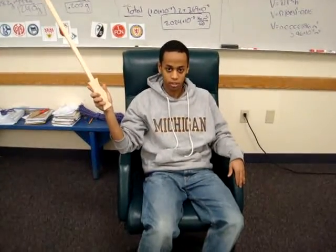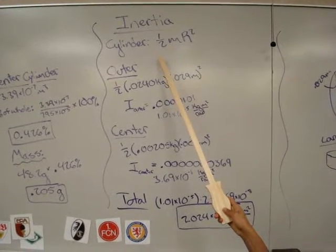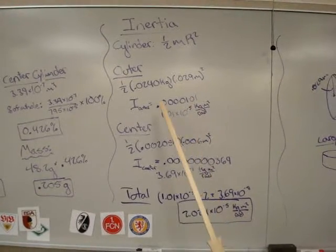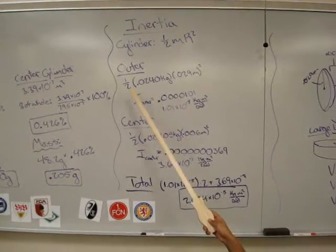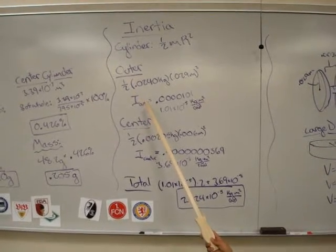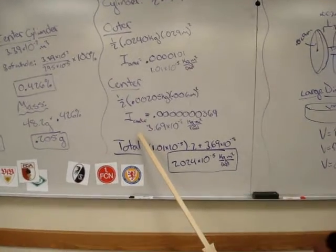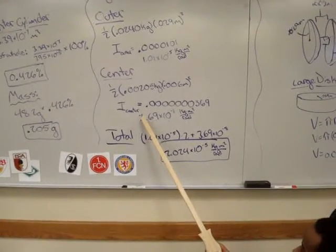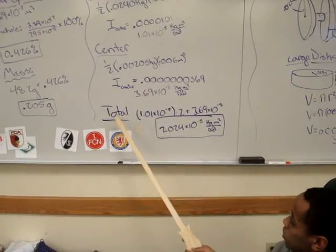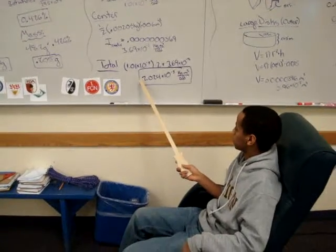Inertia. How did we calculate it? This is how we calculated it. The moment of inertia of a cylinder, according to page 314, is one-half times the mass times the radius squared. After measuring the radius for each of the outer and the center parts, and converting the masses of each to kilograms, we calculated the moment of inertia for each part. After doing the calculations for the outer part, we figured out that the moment of inertia was 1.01 times 10 to the negative 5th kilograms times meter squared over radians. For the center, it was even smaller, 3.69 times 10 to the negative 8th kilograms centimeters squared over radians. We added the two small numbers together to get the final moment of inertia, a total moment of inertia of 2.024 times 10 to the negative 5th kilograms meters squared over radians.